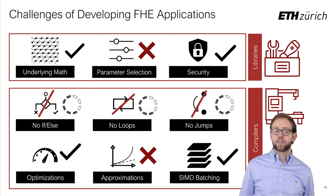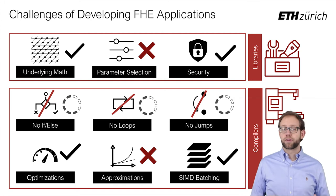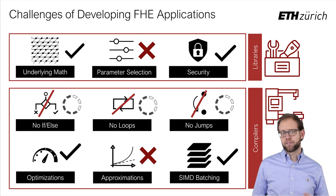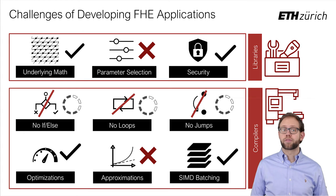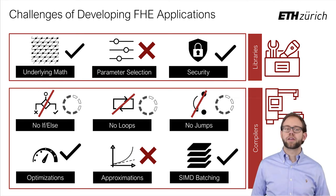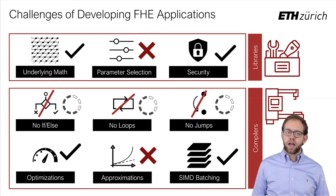As we can see, a lot of challenges remain to be solved. Libraries excel at fast and efficient implementations of the underlying FHE schemes; however, parameter selection remains an open question. Compilers meanwhile provide some assistance with the different computational model, but of course cannot completely insulate developers from these considerations. Later in our evaluation, we will see the significant impact that optimizations, approximations, and the use of SIMD batching have on performance. But first, I want to talk about how compilers actually work.